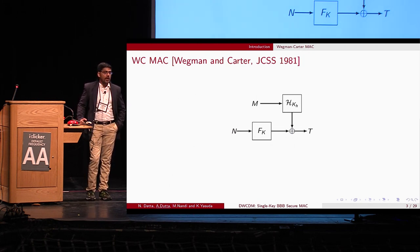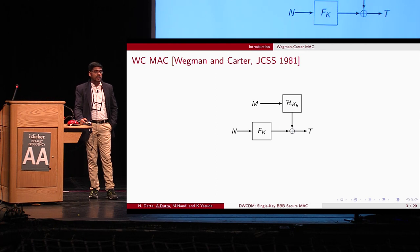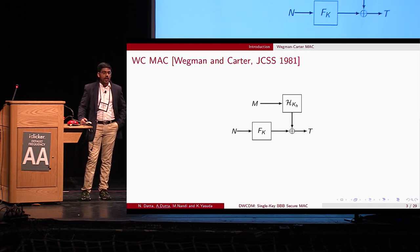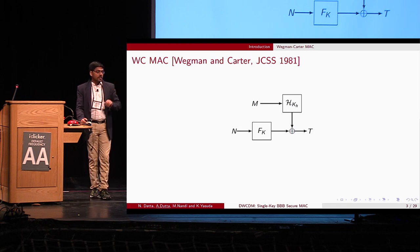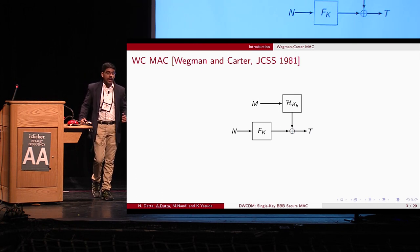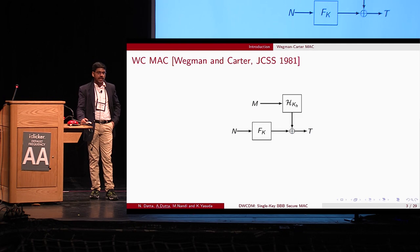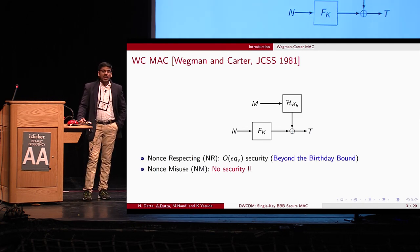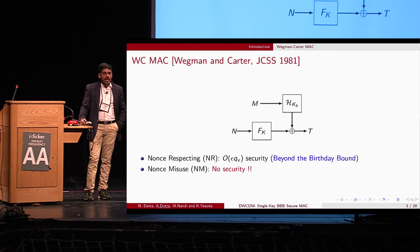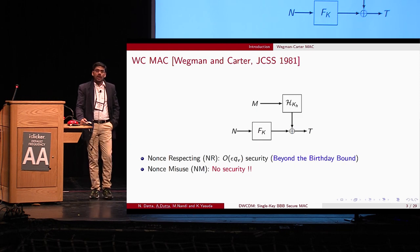The first nonce-based MAC was proposed by Wegman and Carter in 1981, known as the Wegman-Carter MAC. In this construction, the hash value of a message is masked with a random string. The limitation is that each time you authenticate a message, it needs to generate a fresh random string. One possibility is to introduce a pseudo-random function and apply a nonce over it, so that the pad output from function F_K is XORed with the hash value to generate tag T. This gives beyond-birthday-bound security in the nonce-respecting setting, giving order epsilon·q_v security, where epsilon is the differential probability of the hash function and q_v is the number of verification attempts. However, it has no nonce-misuse security — repeating the nonce even once eliminates all security.